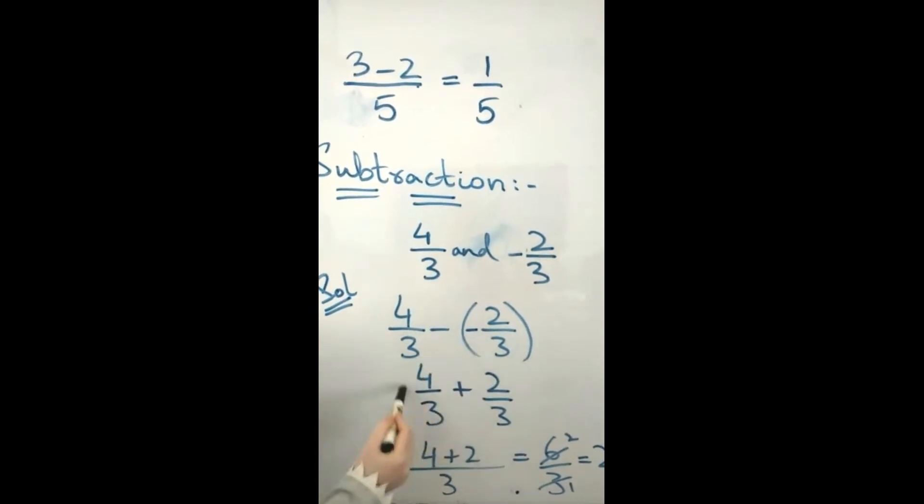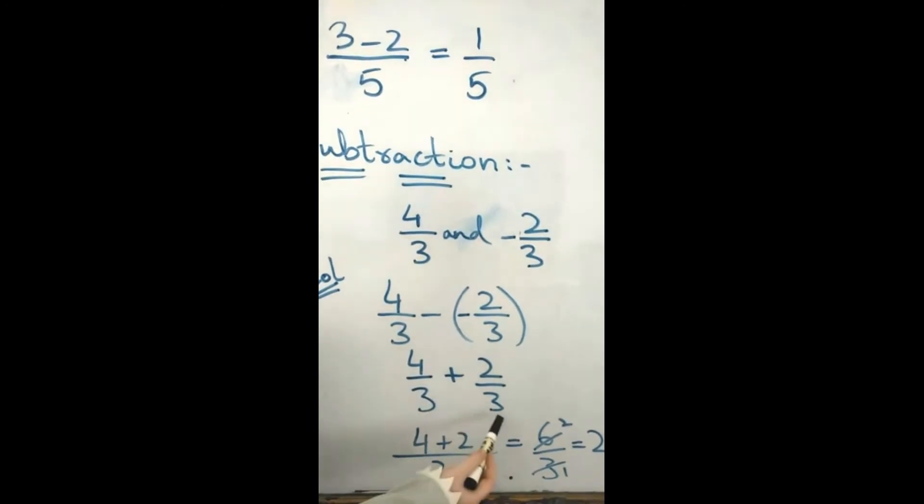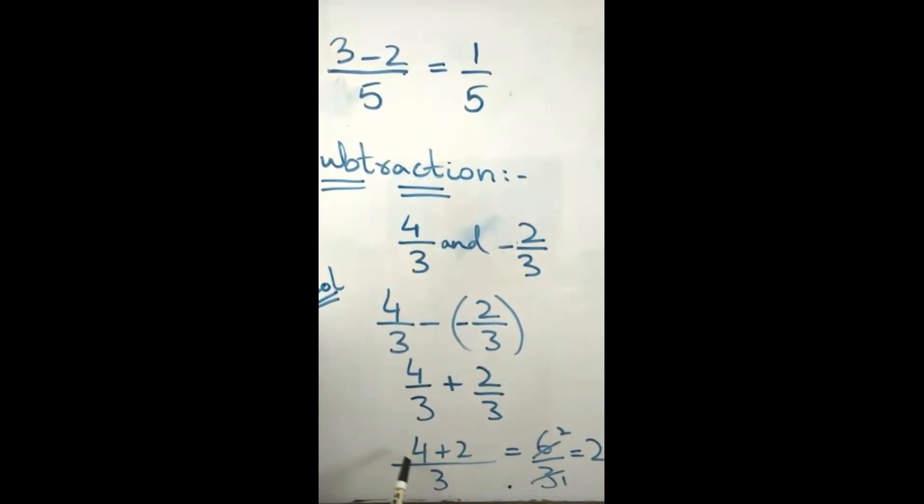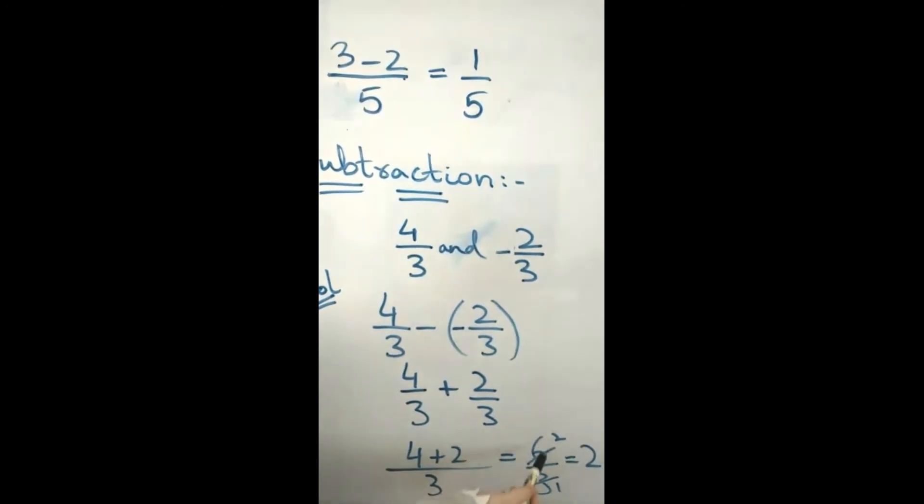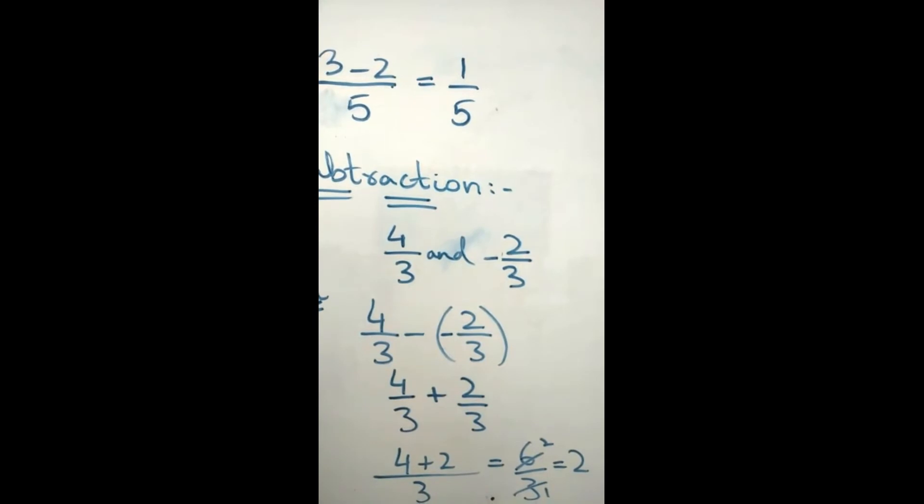Minus minus will be plus. 4/3 plus 2/3. We have the same denominator, so I will write 3 in the denominator. 4 plus 2 equals 6/3. 6 divided by 3 equals 2. So 2 is the answer.